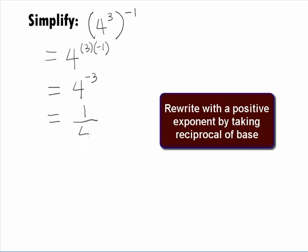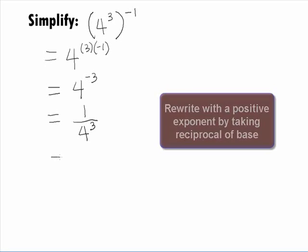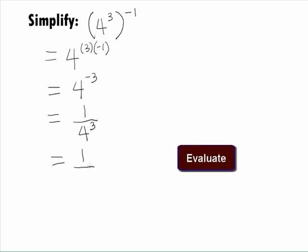According to the definition of negative exponents, we need to take the reciprocal of our base of 4 and rewrite this as 1 over 4 cubed.